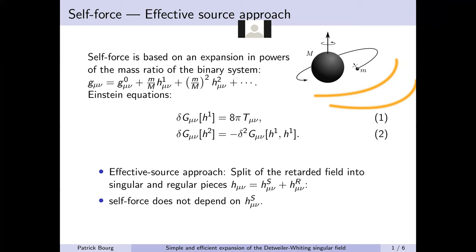This split between inhomogeneous and homogeneous solution is not unique, but it can be chosen in such a way that the self-force that represents the deviation from geodesic motion depends only on the regular piece, and does not depend on the singular piece. So it's quite important to find an efficient method to compute the singular part at high order.